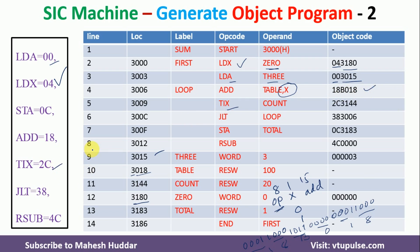Coming back to TIX, the value of TIX is 2C — that is what I have written here. The COUNT address is 3144, written as is since it is direct addressing mode. The same applies to JLT and STA. For RSUB, the value is 4C and it does not have any operand field, so the address is written as 0000. For WORD 3, we write the integer constant 3 directly. For RESW entries, since we are only reserving memory, there is no object code. The WORD with constant 0 has object code 000000.